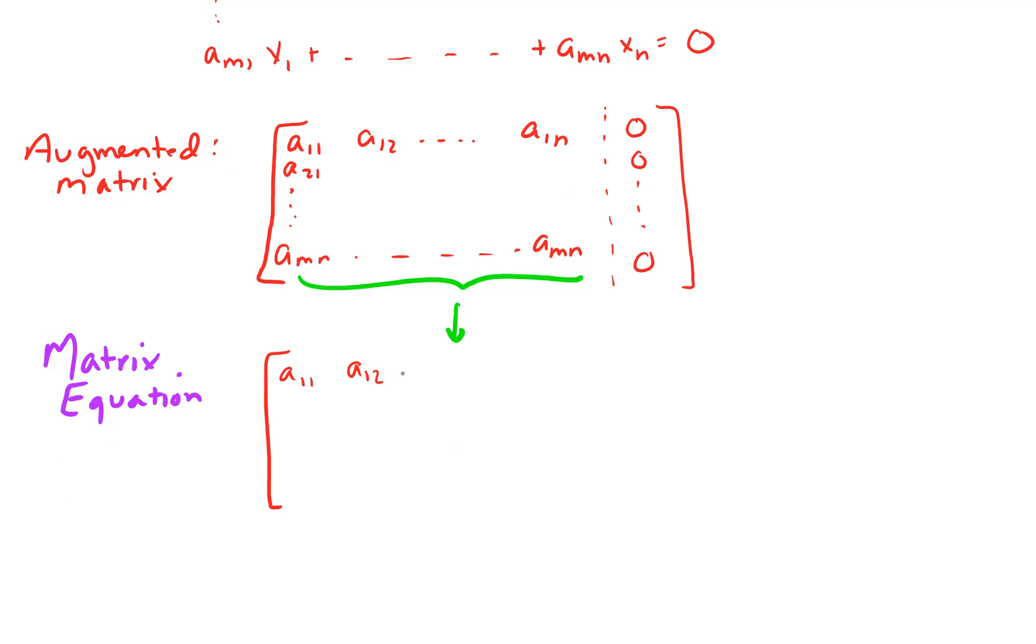Here's A: a11, a12, and so forth, a1n. So this is just our regular old coefficient matrix. We'll denote that A. That's our coefficient matrix.